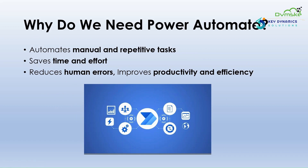Power Automate helps by automating repetitive tasks so you don't have to do them manually. It saves time and effort, allowing you to focus on high priority work. It reduces human errors, ensuring consistency in the process. It improves productivity, making workflows faster and more efficient.